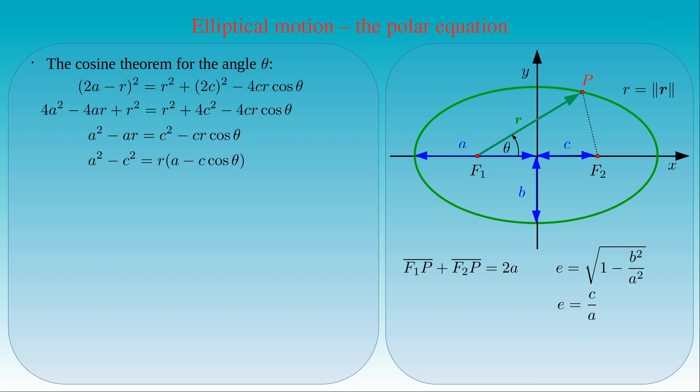Since C can be written as the product of A times E, we also see that A squared times 1 minus E squared is equal to A times R times 1 minus E times cosine theta.